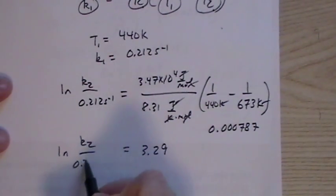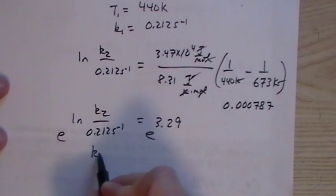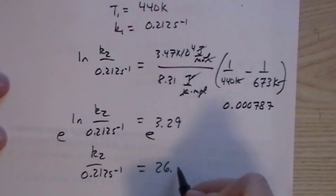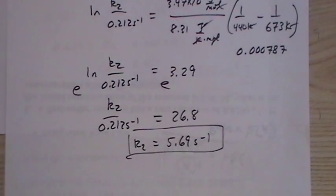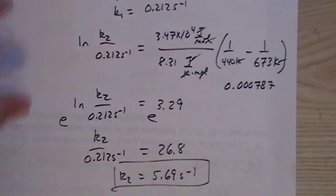And we have K2, 0.212 inverted seconds. We take the antilog of both sides. This is 26.8. So K2 is going to be 26.8 times 0.212. And this is going to be 5.69 inverted seconds. A monster of a problem, but very straightforward in that you just put in the numbers, solve, put in the numbers, solve.